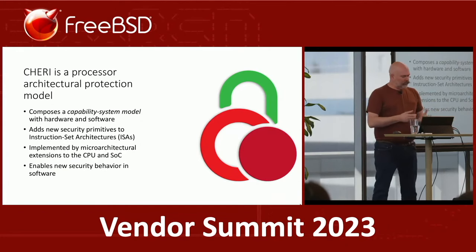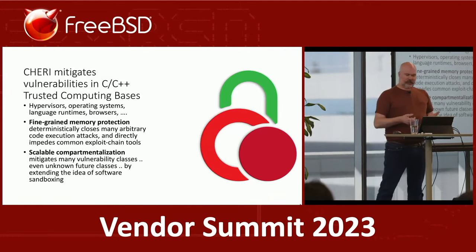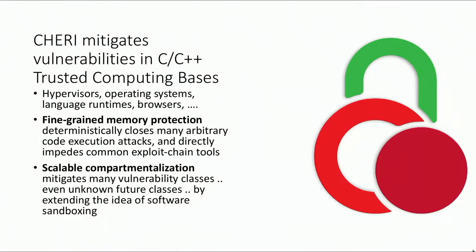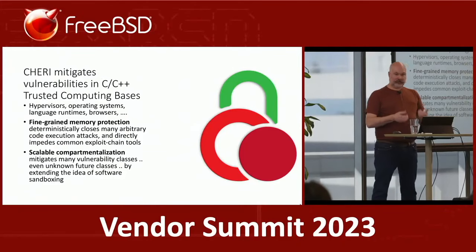CHERI mitigates vulnerabilities in C and C++ codebases, particularly trusted computing bases like your operating system — hypervisors, operating systems, language runtimes, browsers. Java is generally memory safe, but a typical JVM sits on top of a million lines of C code, and then there's the JNI giving you access to every piece of C ever written. We provide fine-grained memory protection as well as scalable compartmentalization. Combined, CHERI compartmentalization gives orders of magnitude faster domain switches and allows for much finer-grain compartments.